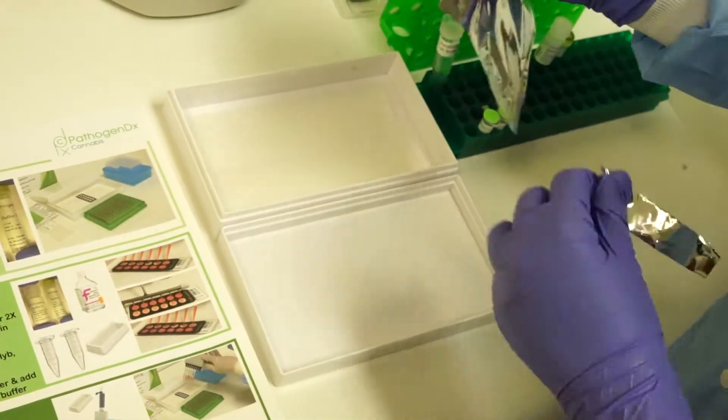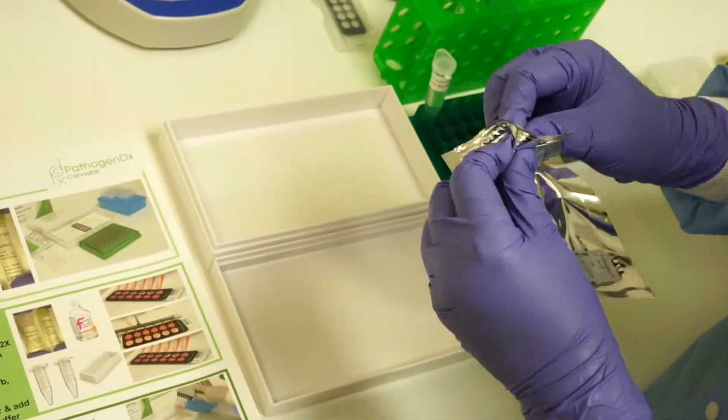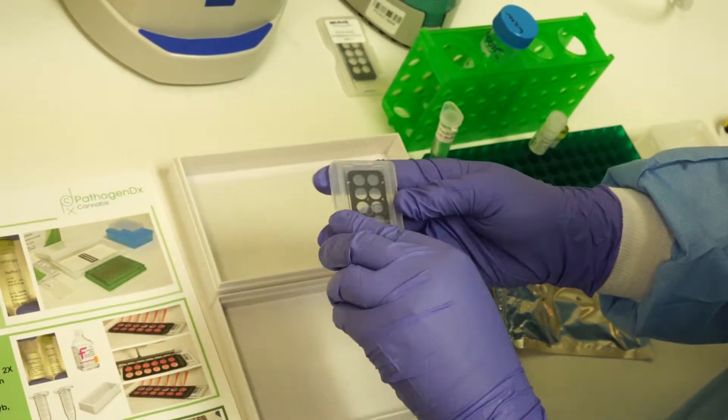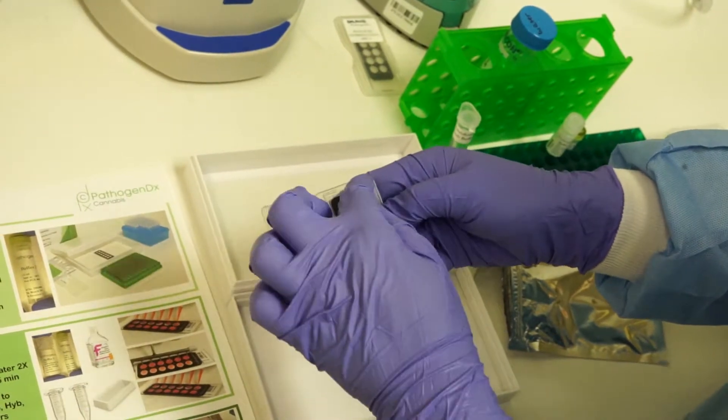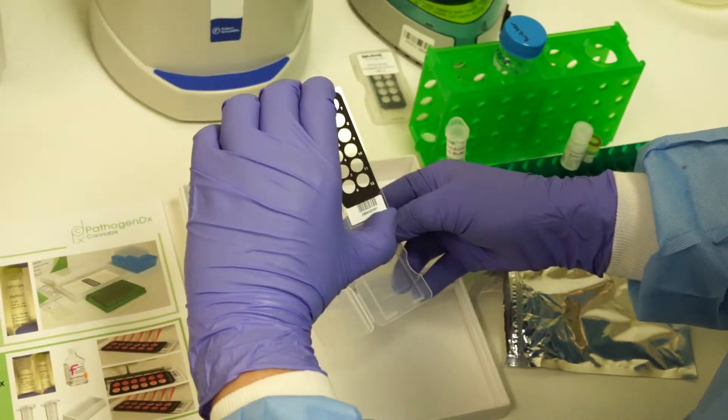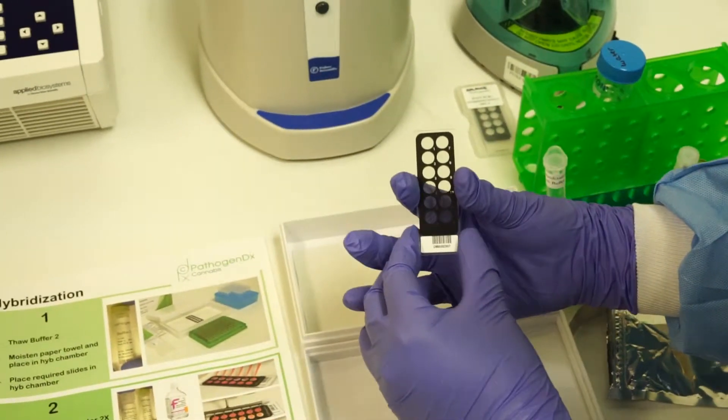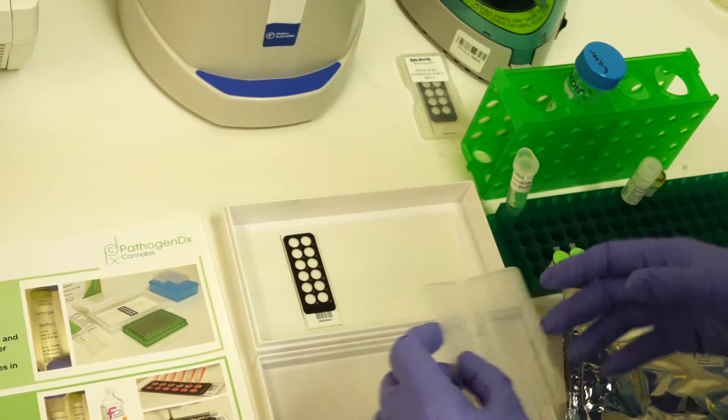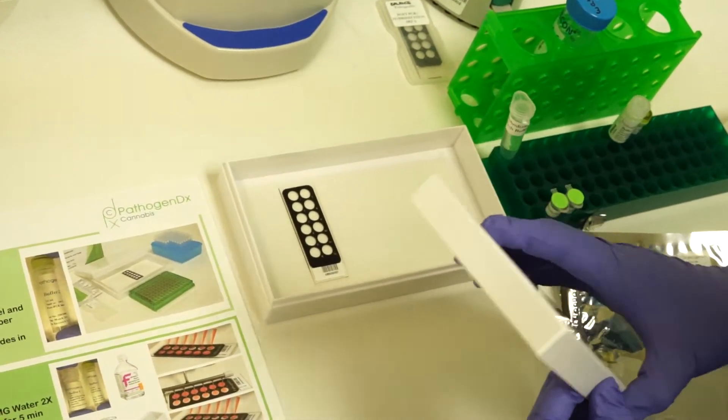Open your slide package and remove the slide from the foil seal. When handling the slide, avoid touching the surface. Use the edge of the slide or the barcode for handling. Place the slide onto the paper towel and close the lid until ready to begin.